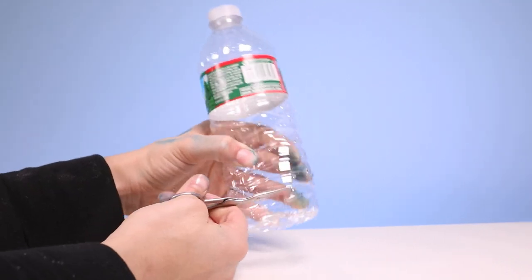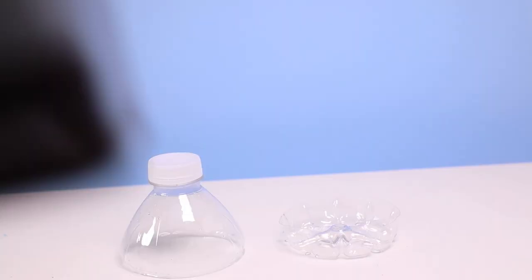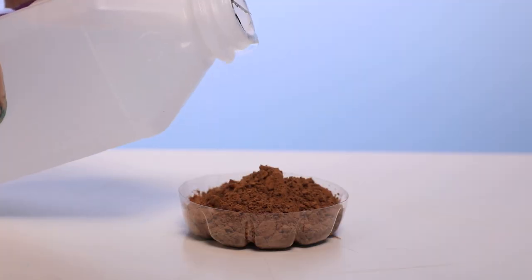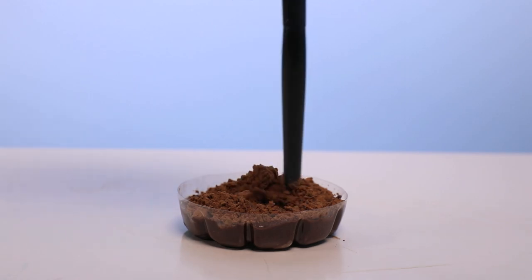To make the bronzer, cut the bottom half of the water bottle off and the top half off. And pour some cocoa powder into the bottom and some rubbing alcohol. Mix that up and use a tissue and something to press it down until rubbing alcohol is evaporated.